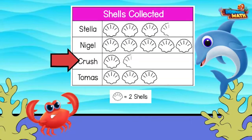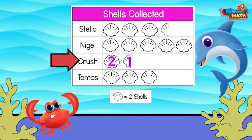Crush, you found the least number. To find the number of shells you found, we count by twos. The first shell is two, then there is a half shell — this is worth one. Two plus one equals three. You found three shells!